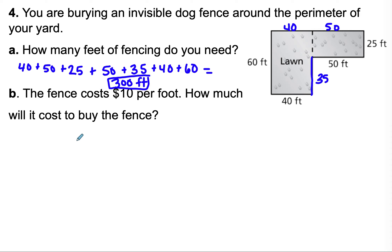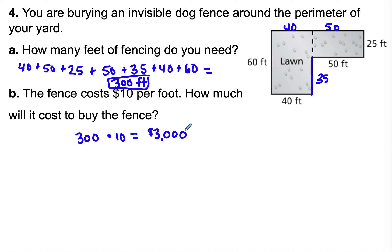The fence costs ten dollars per foot. Taking three hundred feet times ten dollars per foot, it will cost three thousand dollars to buy the fence.